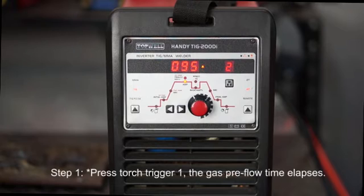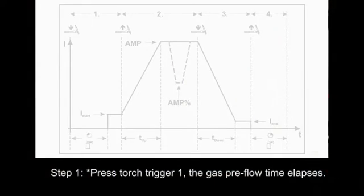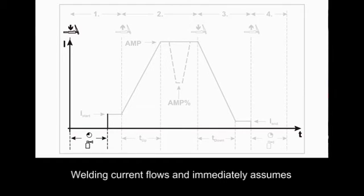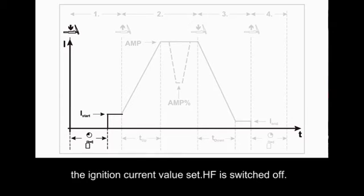About 4T. Step 1. Press torch trigger 1. The gas preflow time elapses. HF ignition pulses jump from the electrode to the workpiece. The arc ignites. Welding current flows and immediately assumes the ignition current value set.